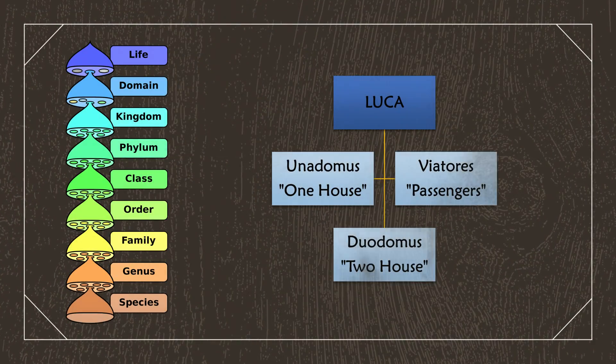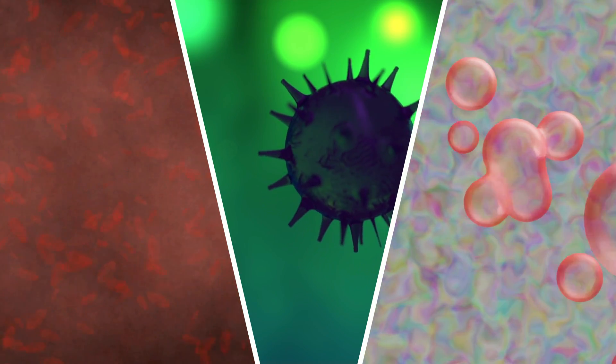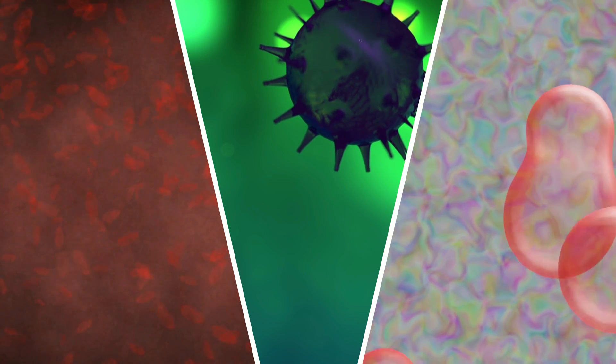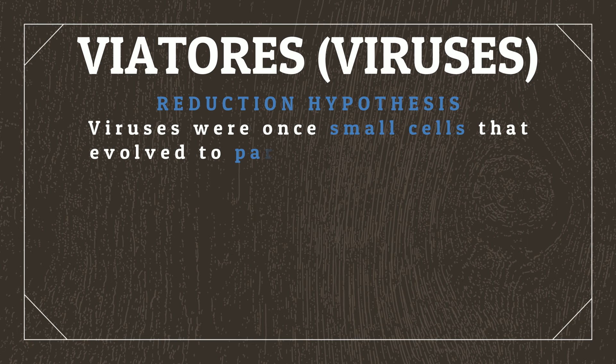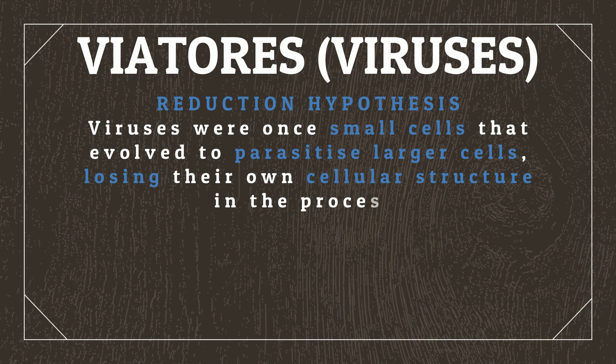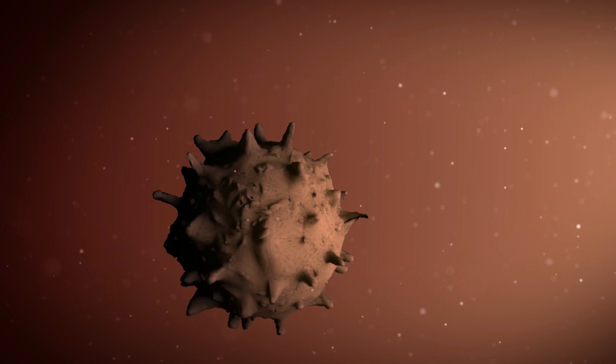We can save ourselves an enormous amount of hard work by setting up the foundational kingdoms and phyla quickly. Let's branch Luca off into three main domains: the Unodomus, Viatoris, and Duodomus, representing organisms that are similar to bacteria, viruses, and multicellular eukaryotic life, respectively. For our virus analogues, the Viatoris, we're using the reduction hypothesis for their origins, which states that viruses were once small cells that evolved to parasitize larger cells, losing their own cellular structure in the process. Using the reduction hypothesis, we'll say that viruses on Locus are descendants from Luca.